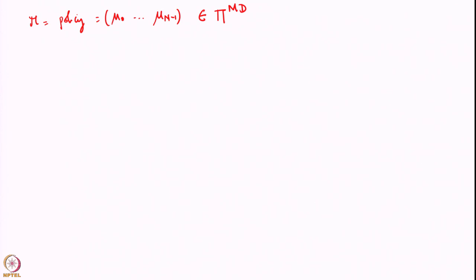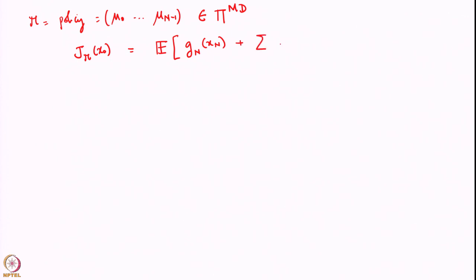The policy has to minimize a cost, and the cost that you get when you apply a policy pi to the problem is given by this expression. We had a cost which was the expectation of a terminal cost g_n(x_n) plus the sum of the stage-wise costs g_k of x_k, u_k, w_k, where the sum goes from 0 to n minus 1.